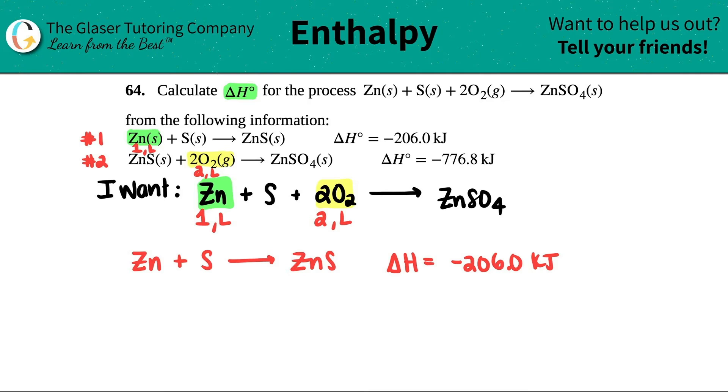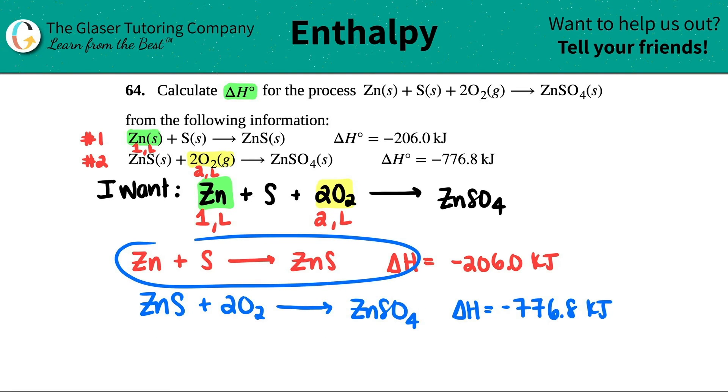So all I'm going to do is rewrite this equation. So Zn S plus 2 O2 yields Zn SO4. And since I didn't do anything to this equation, the delta H just comes along for the ride. Now here's the thing. If you wrote down the two equations, you will not write them down again. So technically I should be done. As soon as you write down your equations, you don't have to write them down again.